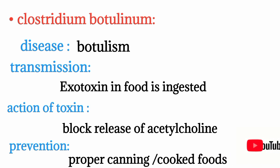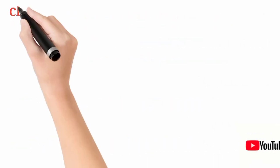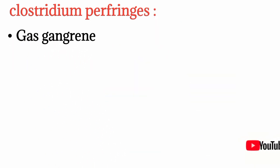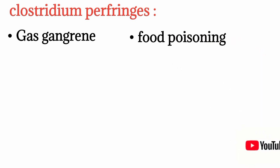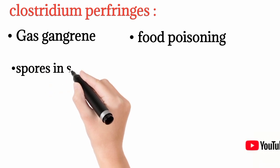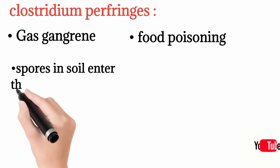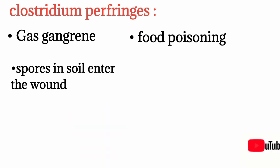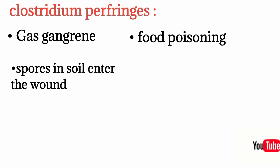Clostridium perfringens causes two diseases: gas gangrene and food poisoning. Gas gangrene occurs when spores in the soil enter a wound — for example, a foot wound — causing necrosis of the area.